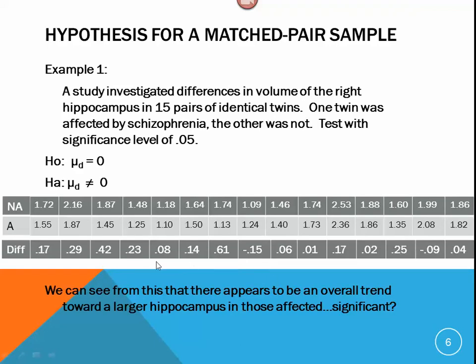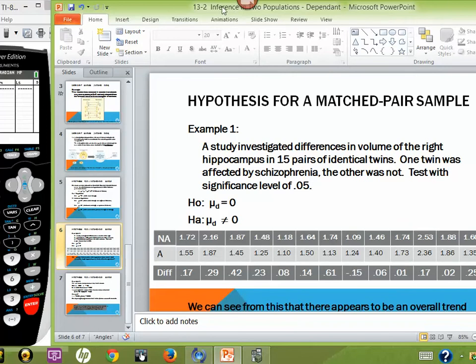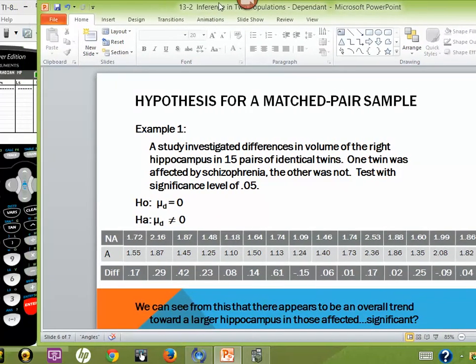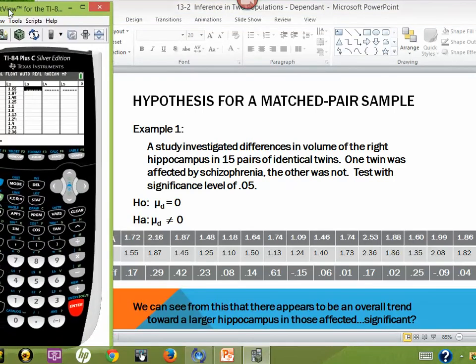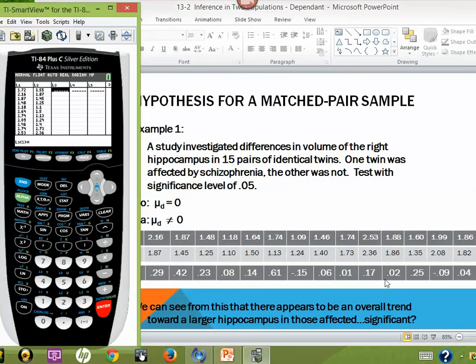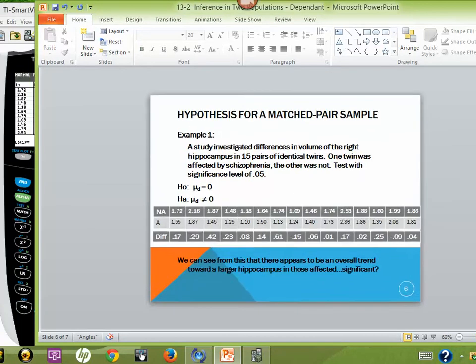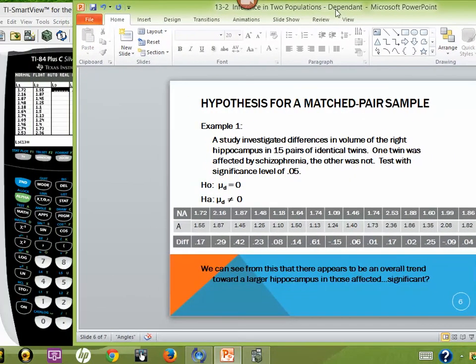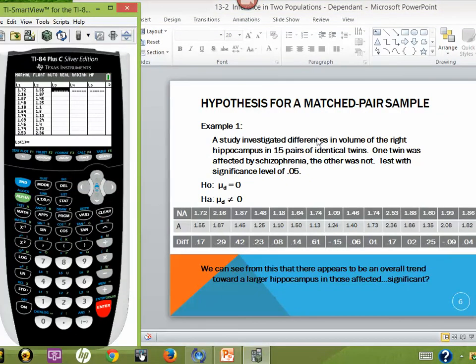At this point, I want you to pull out your calculators and we're going to go through this together. You can see at this point that I already have these values in my calculator. This is a study investigating the difference in volume of the right hippocampus in 15 pairs of identical twins. Identical twins have the same genetic makeup, so we would expect there to not be any differences because they have the same genetic makeup. However, one twin was affected by schizophrenia where the other was not. We'll test with a significance level of 0.05.